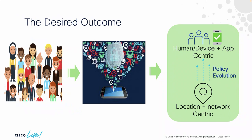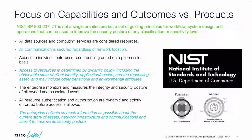Let's dive right into it and talk about the desired outcomes and why we are talking about automating zero trust. We see a lot of happy users and we want to make sure they stay happy. The situation has changed in the past few years — we are in a hybrid work environment where users are no longer working from the office. They are accessing applications anywhere in the world, and we want to make sure they have a good and secure experience. We have to shift from location-centric security to device, human, and application-centric management. For that to be achieved, the zero trust framework was developed.